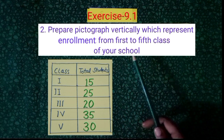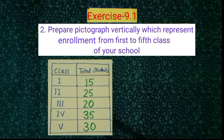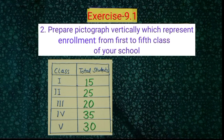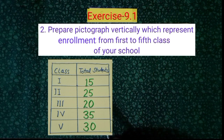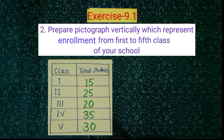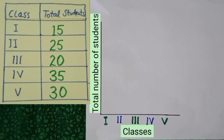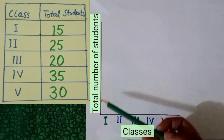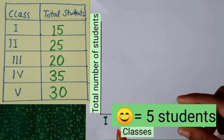Now see the 2nd question: prepare a pictograph vertically which represents enrollment from 1st to 5th class of your school. So firstly we should write the total number of students from 1st to 5th class on the attendance board. Now we represent this attendance on a vertical pictograph, writing 1st, 2nd, 3rd, 4th, 5th class from left to right. We use a smiley symbol which represents 5 students.